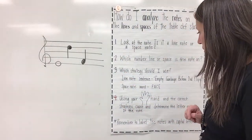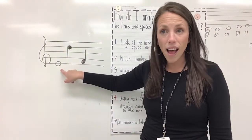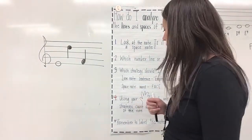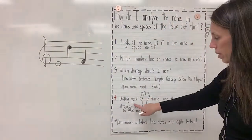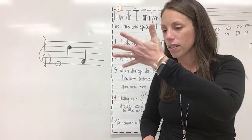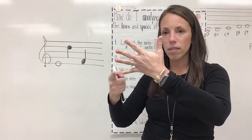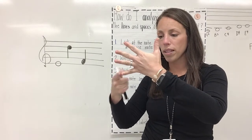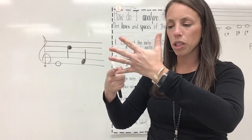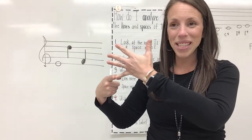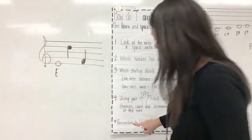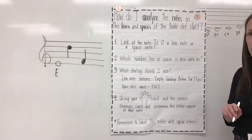Which strategy should I use? Well, we know it's a line note, so we need to use our line note strategy, our sentence: 'empty garbage before dad flips.' In step four, using our hand and the correct strategy, we're gonna count and determine the letter name of the note. Our note is on line one, so let's find line one: one. Let's say our sentence — empty, garbage, before, dad, flips. Which word did we say on line one? Empty. That's right, so this note is an E. Excellent. Remember to label the notes with capital letters.